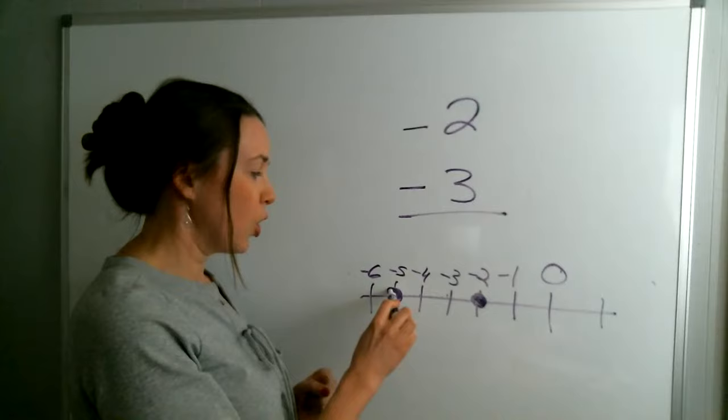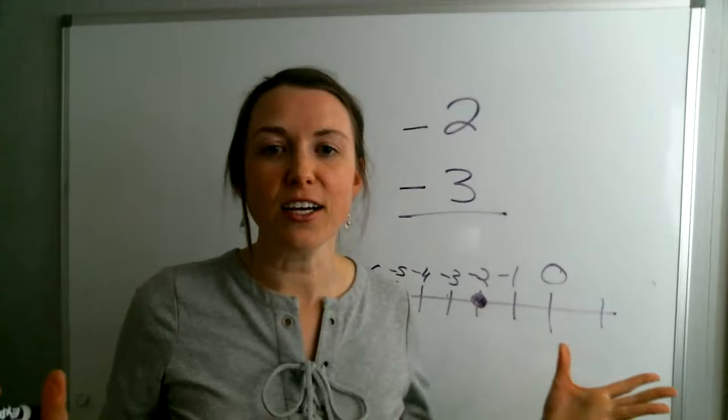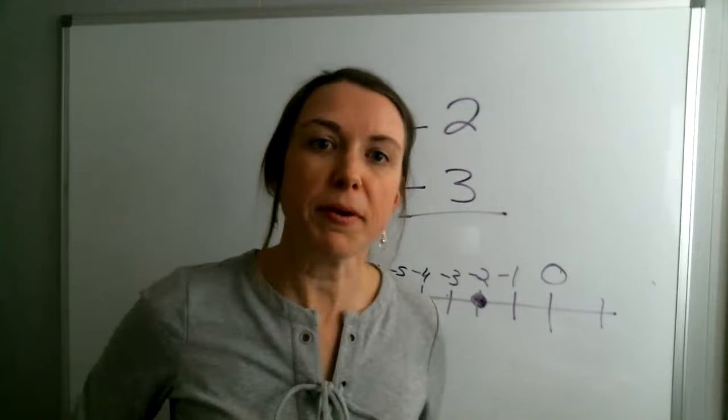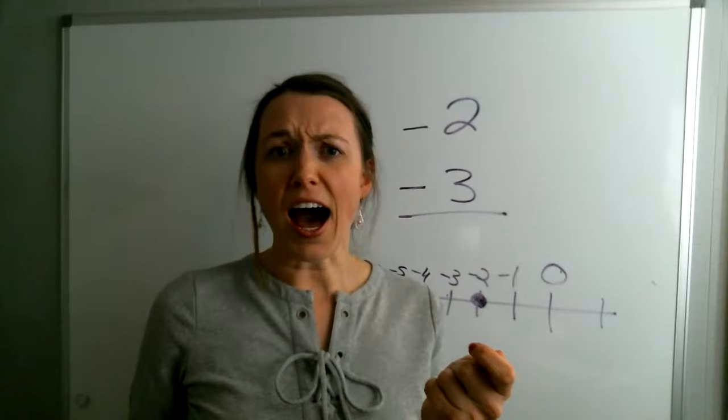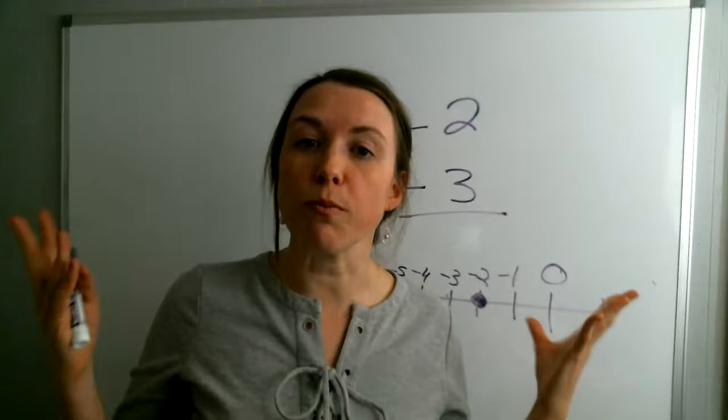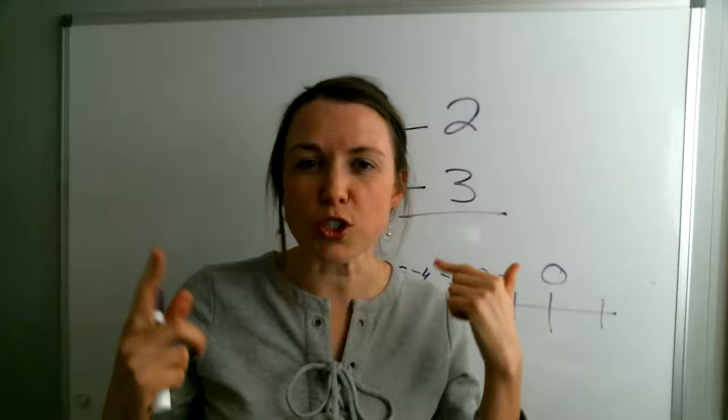Think about it like this: let's say you borrow $2, and then you need three more dollars, so you borrow three more. How much money have you borrowed? $5. And that's what you have to do — it's kind of tricking the brain a little bit to do it like that.